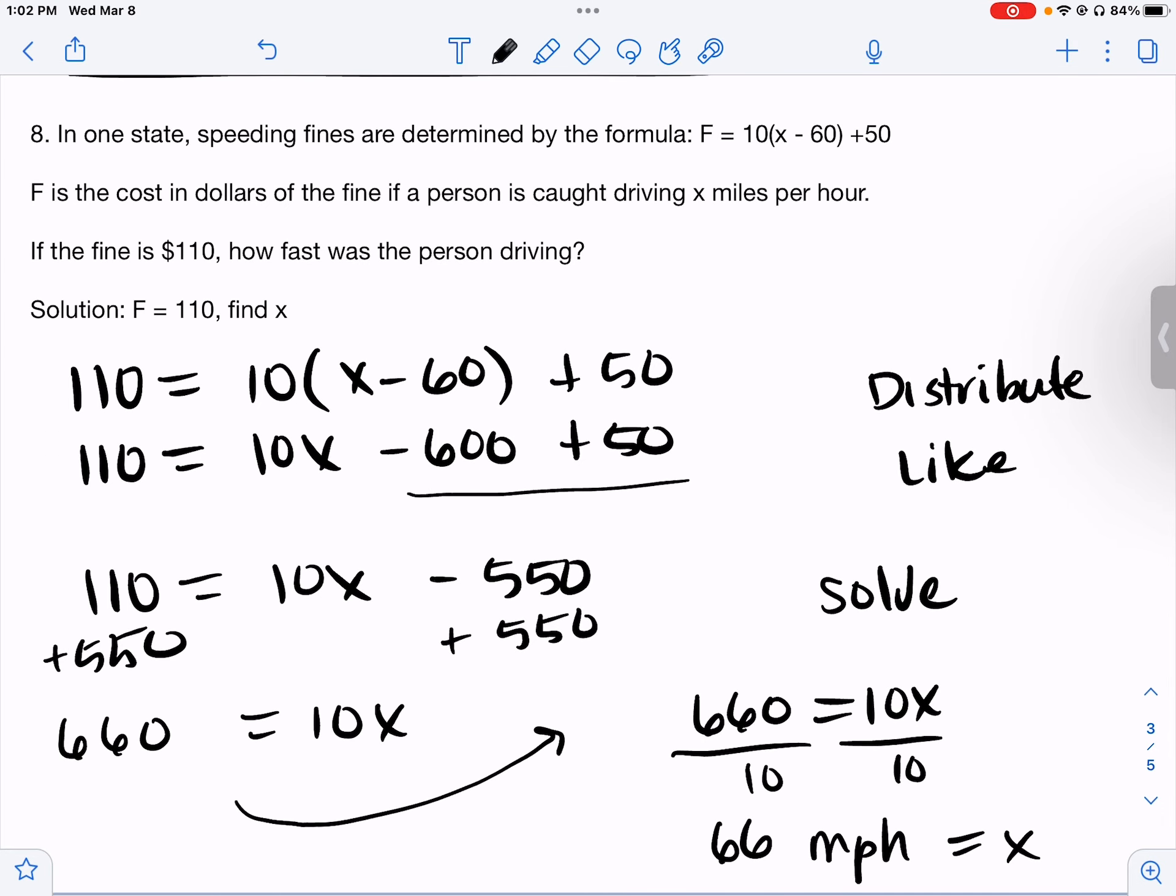Number eight: In one state, speeding fines are determined by the formula F equals 10 times (x minus 60) plus 50. F is the cost in dollars of the fine if a person is caught driving x miles per hour. If the fine is 110, how fast was the person driving? Okay, so that means F is 110, find x. So we're going to put 110 in for F and solve for x.